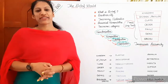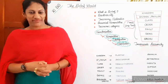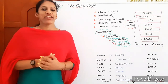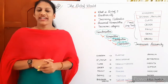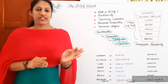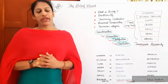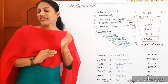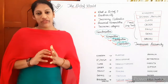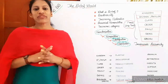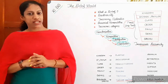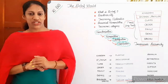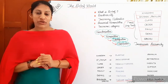Hi everybody, welcome back to Plus One Biology. The Living World is the first chapter in your textbook. The topic 'taxonomical aids' has already been deleted from your syllabus. But the first half of the chapter is given — it's a very small chapter covering very basic concepts about life, living organisms, their organization. So let us discuss these topics today.